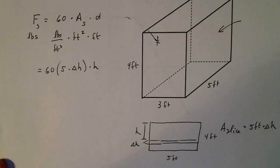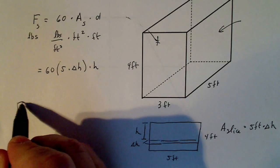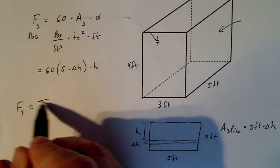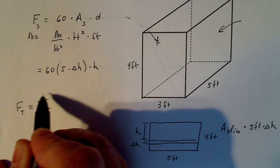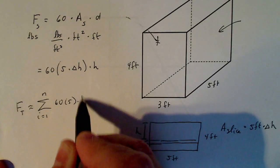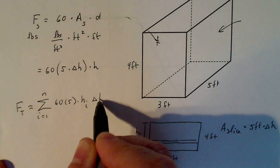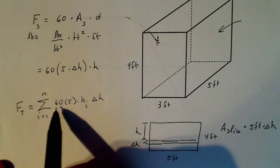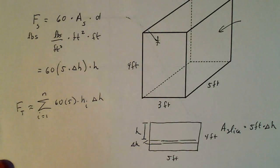Now, if you're at the college that I teach, they want you to write this in a Riemann sum before you write it in an integral. So you can say the force, total force, is approximately equal to the sum of i equals 1 to n of 60 times 5 times H sub i times delta H. H sub i is what's changing as the counter changes. These are constants. Delta H is the same no matter what.